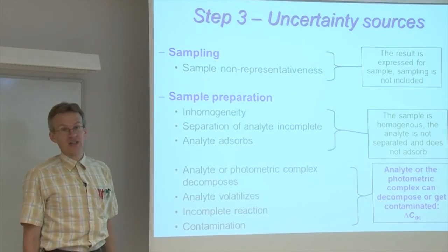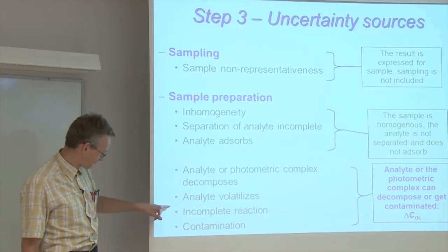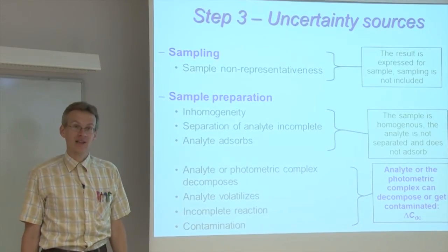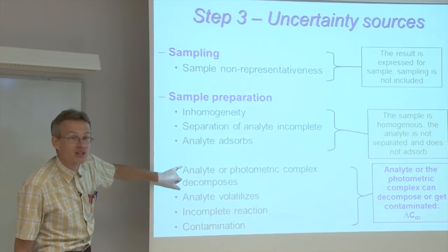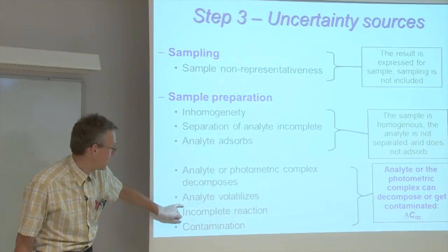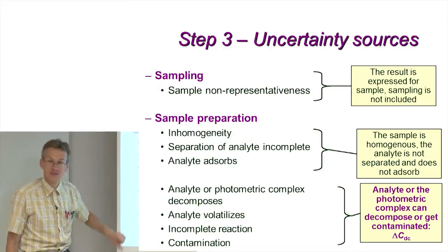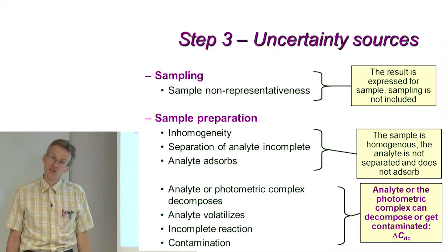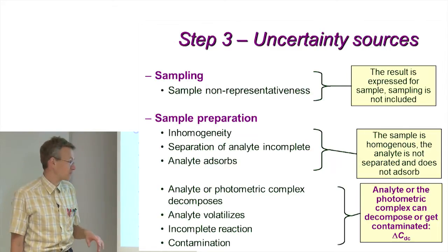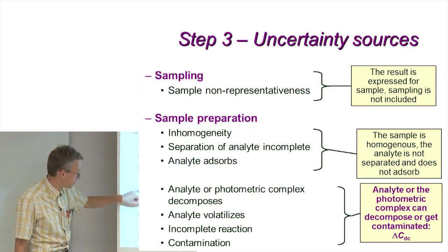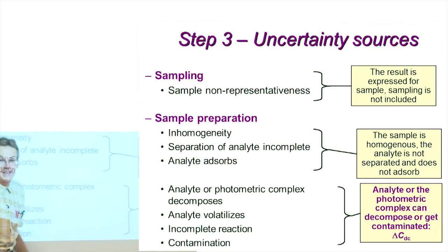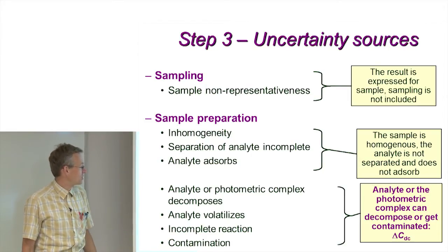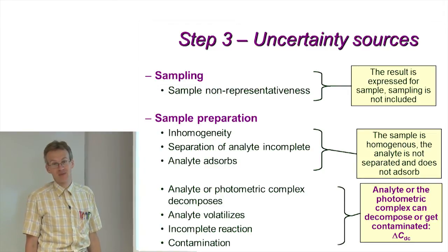The reaction with the photometric reagent can be incomplete, and this uncertainty source is actually coupled to decomposition. From the point of view of our result, it does not matter whether the photometric complex partially decomposed or did not even form — these two effects have the same impact on the result. Finally, contamination is very much possible with ammonium determination, because ammonium is everywhere around us. All these factors are taken into account by the additional term delta_c_dc, which covers the additional factors that can influence the analysis result.